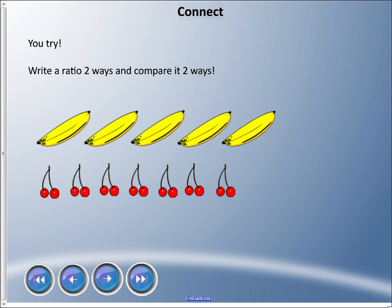Now you try. I want you to write a ratio two ways and compare it two ways. We're going to assume that each cherry is one. Let's count the bananas: one, two, three, four, five bananas. For cherries: one, two, three, four, five, six, seven. So bananas to cherries is 5:7.